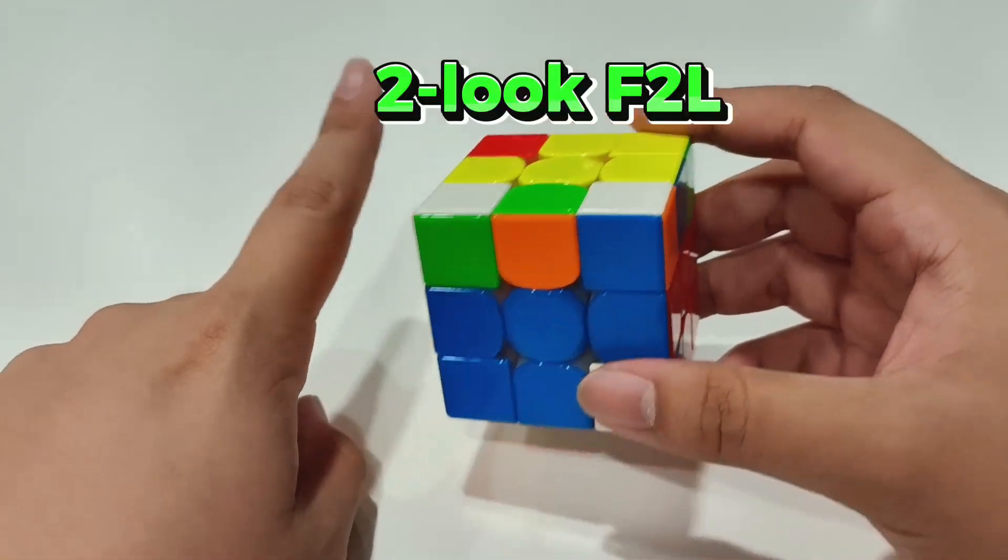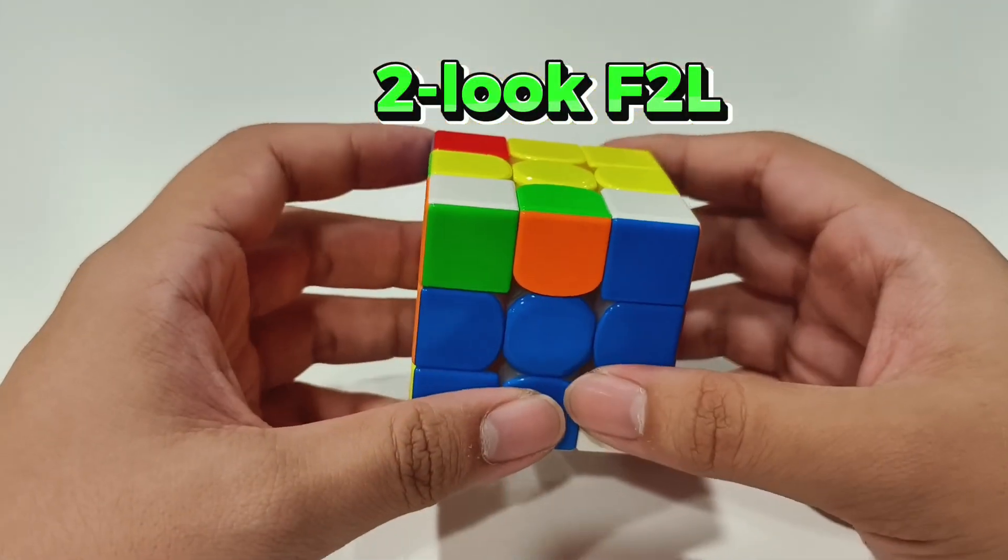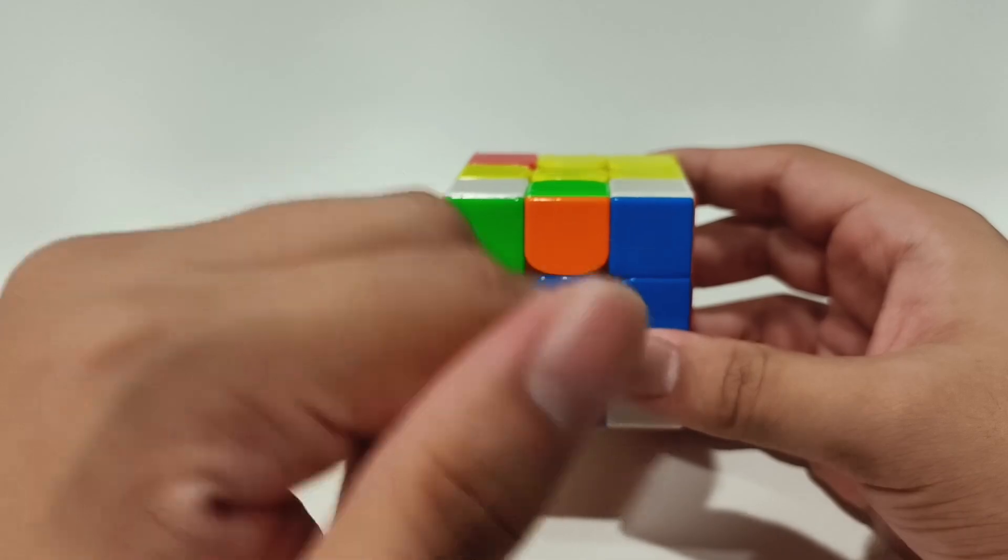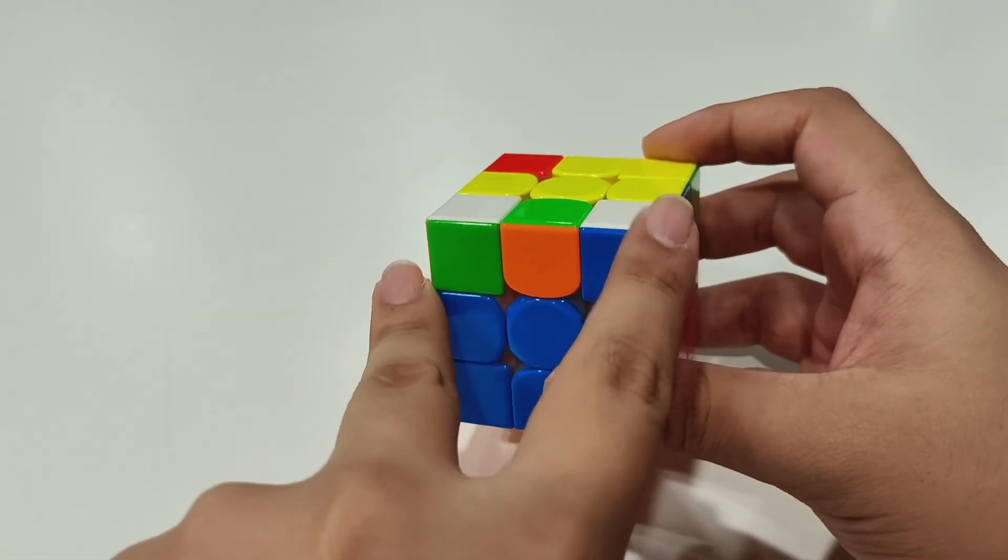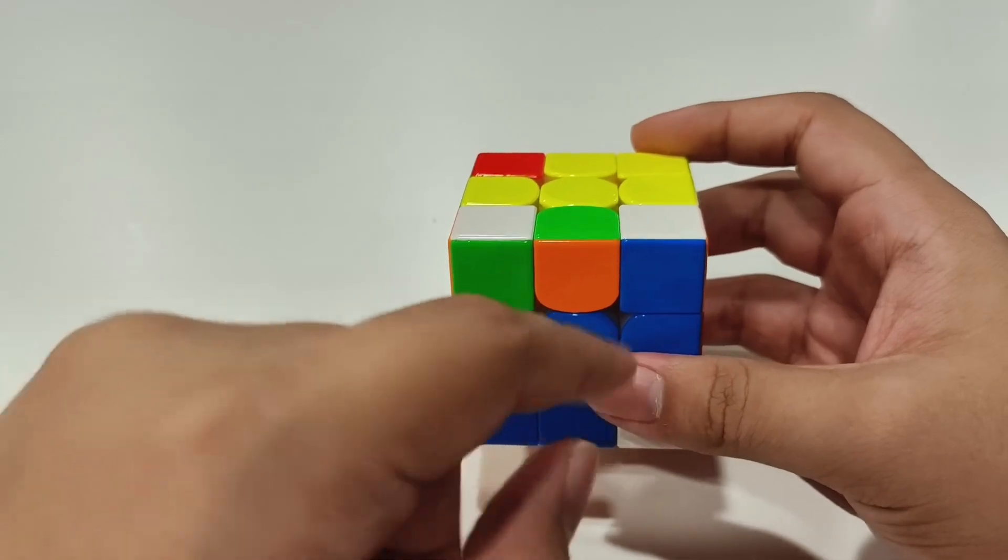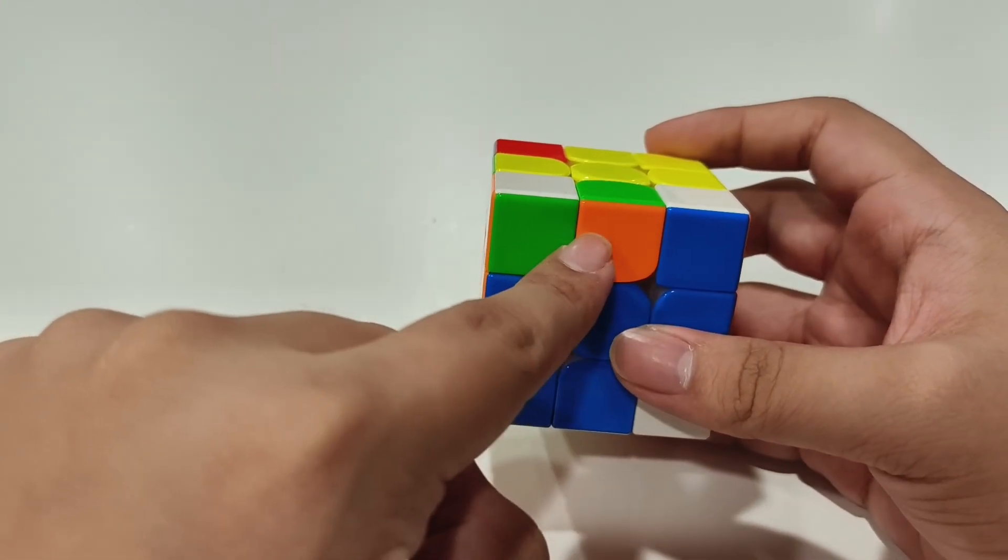So basically I did the two-look F2L. First is cross plus first pair here, and the second time I looked I solved the rest. So I did these two first and did it in a way so that this case is set up in a very nice and easy way to solve it.